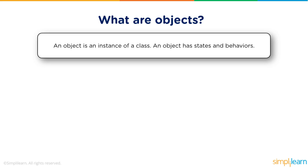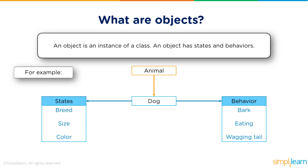So what are objects? An object is an instance of a class. In this example, animal is a class and dog is its object. The object dog has states and behaviors. We can have dogs with different breeds, sizes and colors — these are considered as the states of object dog. On the behavior side, dog has behaviors like barking, eating and wagging tail. So an object has its own states and behaviors.